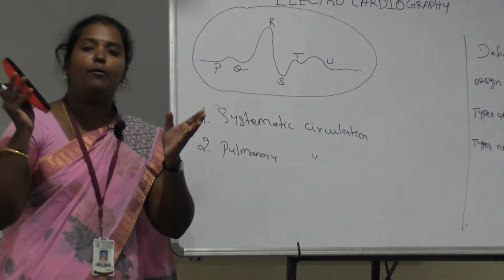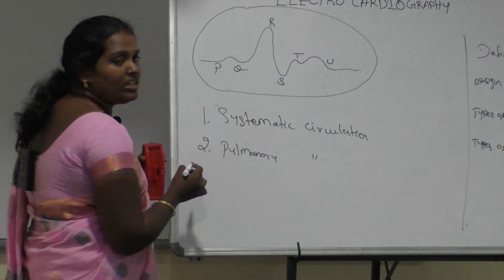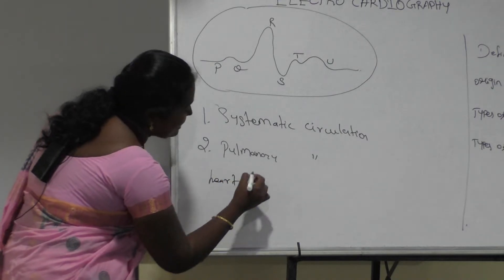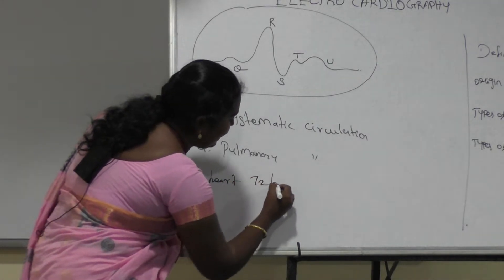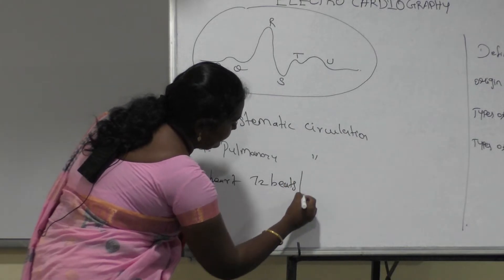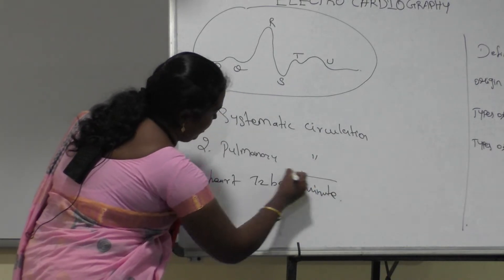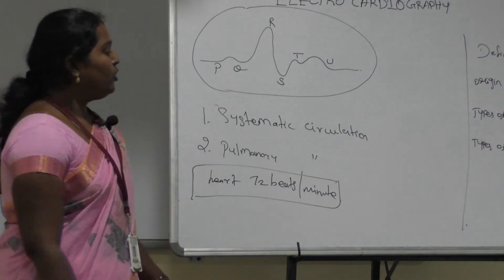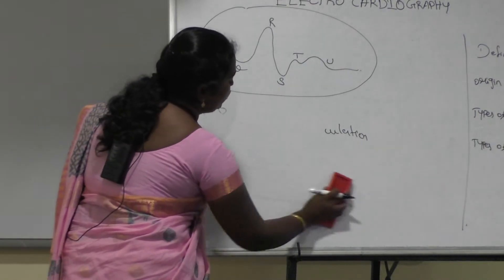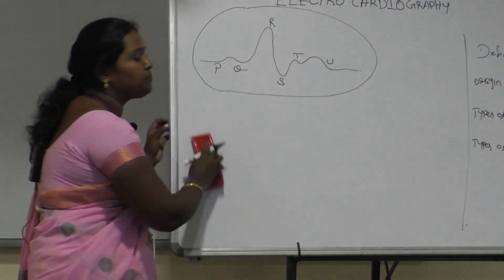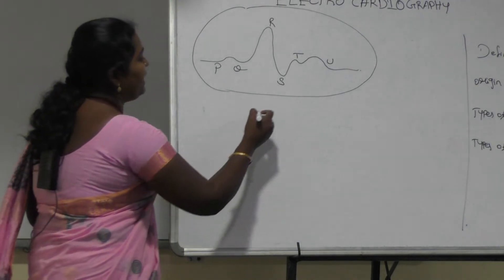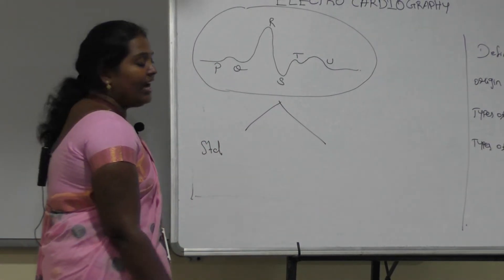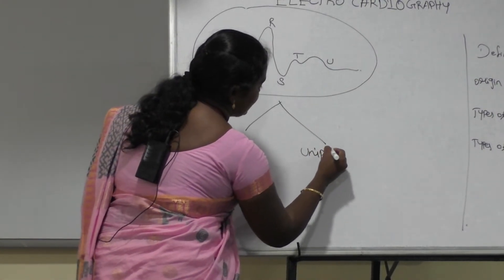We also need to know how heartbeats are generated. During the blood pumping process, the heartbeats are generated. Normally, humans have a heartbeat rate of 72 beats per minute. There are two types of lead systems: the standard lead system and the unipolar lead system.